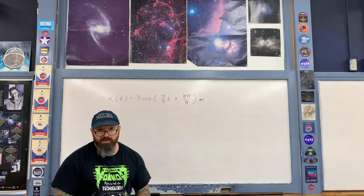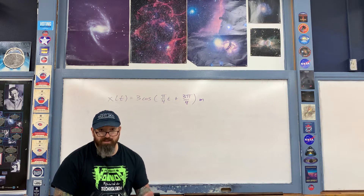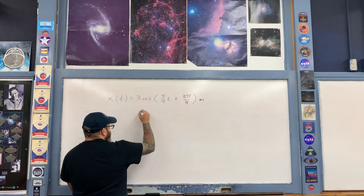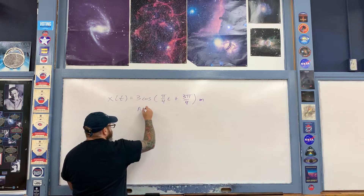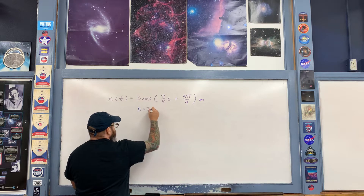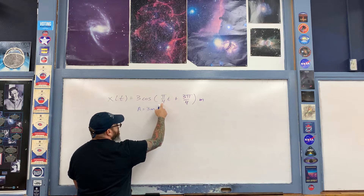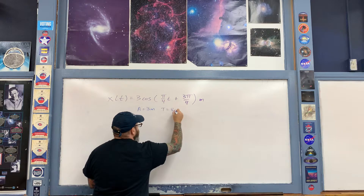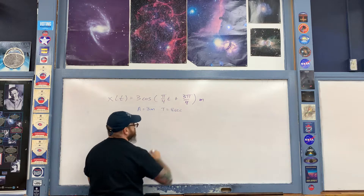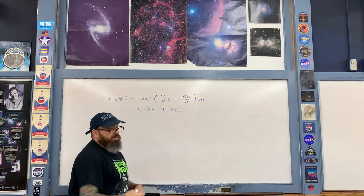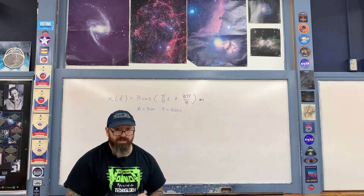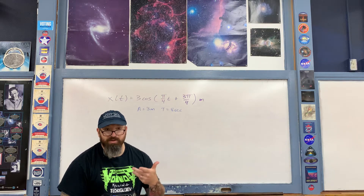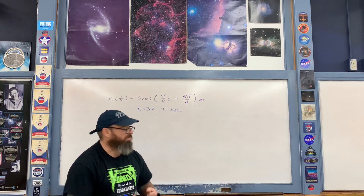Let's immediately start to read the information from the expression. The amplitude is given as 3 meters, the angular frequency is π/4 radians per second, and therefore the period is once again 8 seconds. When it comes to graphing this function and other trigonometric functions, here's how we read the shortcut.